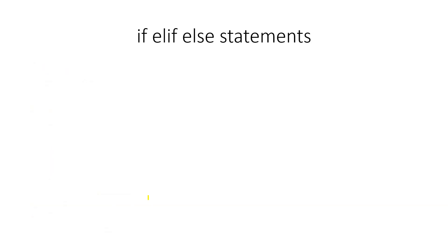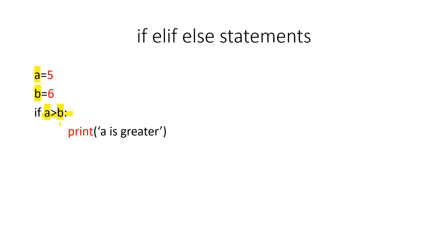Now we have another kind — if, elif, and else statements. Here we have two conditions. For example a equals 5 and b equals 6. Type 'if a > b:', press Enter, give spaces, then 'print a is greater'. Press Enter, then use 'elif' if you have another condition. We use elif here because we have a second condition: 'a < b'.